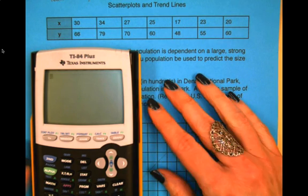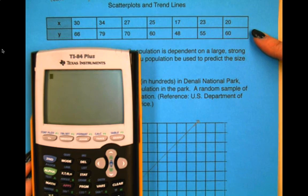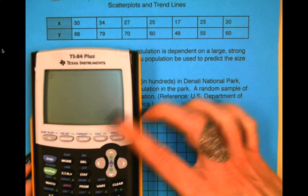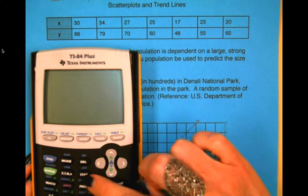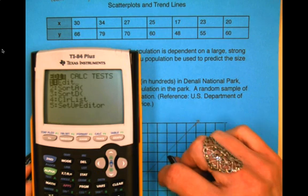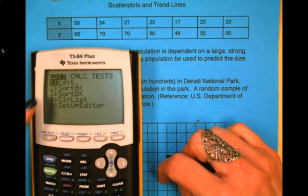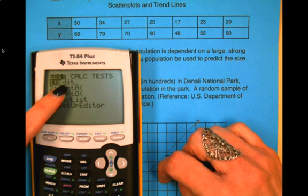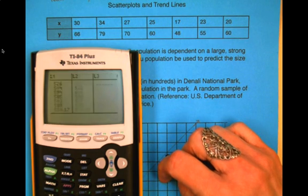Next we need to enter the data from this data table, and to do that on our calculator, we press the STAT key, or statistics. We are going to edit the lists. This gets us to the list, so we are going to choose number one, edit.